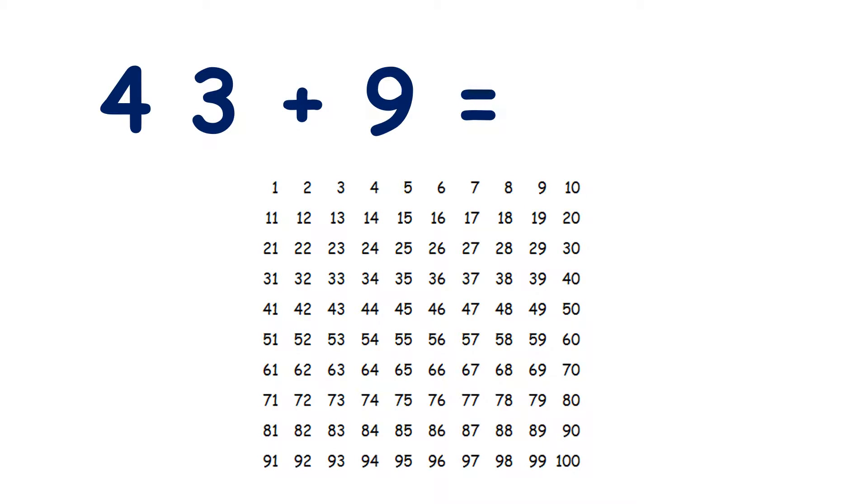We can add 9 very quickly on a 100 square if we remember that 9 is 1 less than 10. So we have 43 plus 9, so let's find 43, and we know that to add 10 on a 100 square, we move 1 place down. But we don't want to add 10.